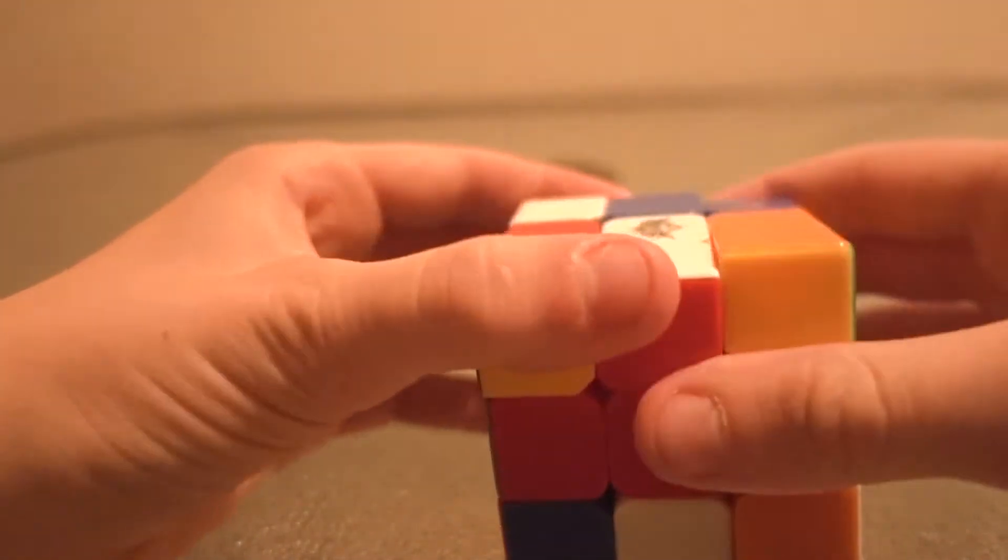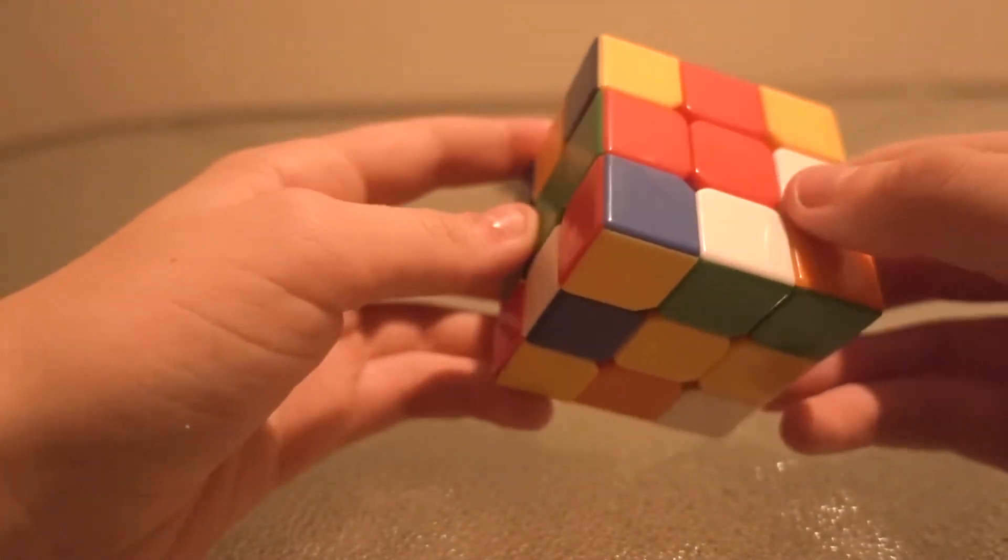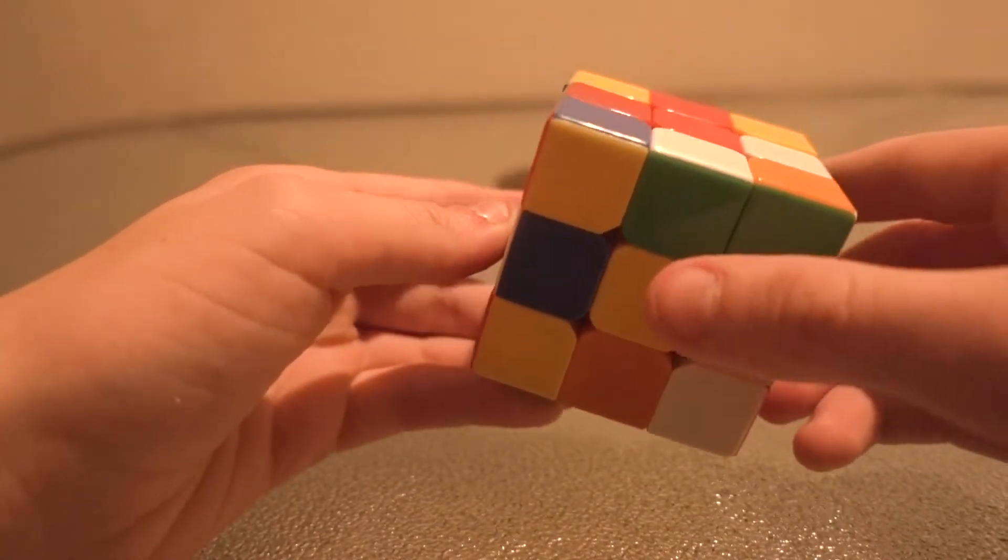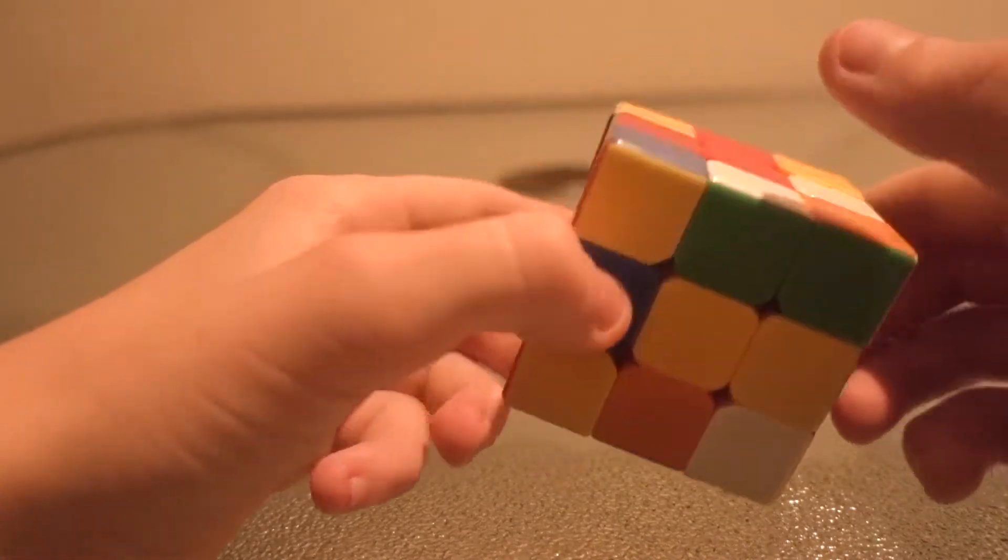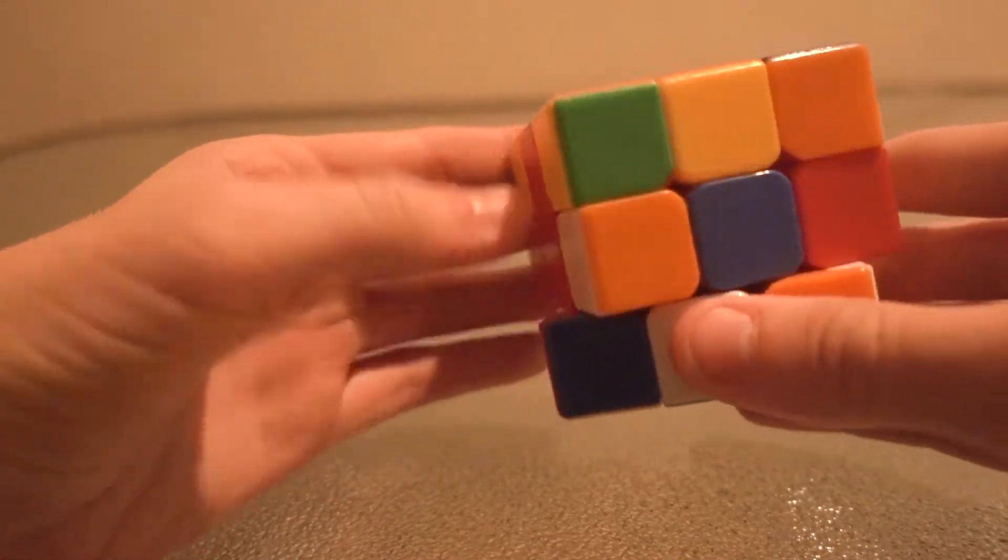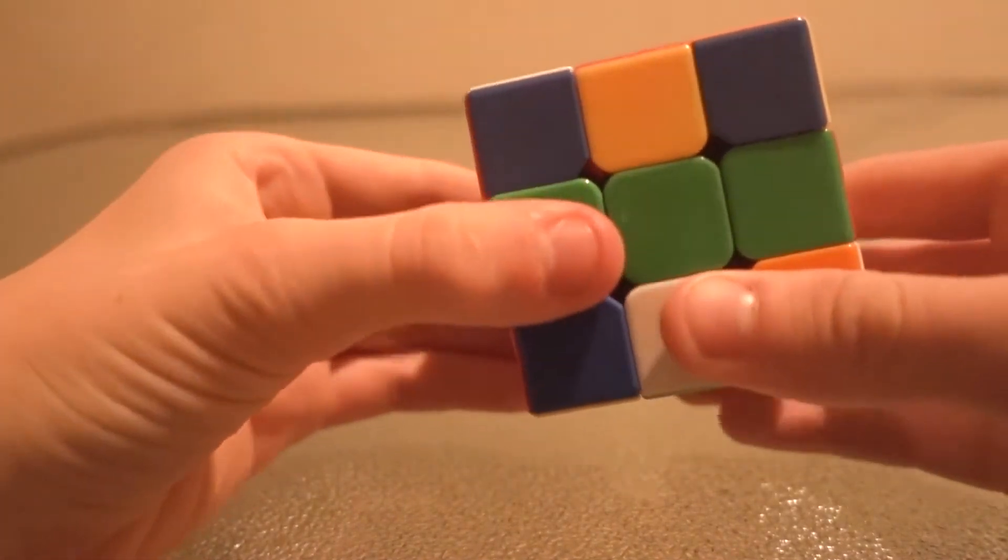And now we have these two matching and then white on top. Now we have to find the green one because this is green and white. So we'll just turn this until we find green, which is right here.